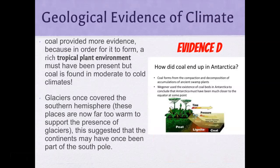Here's more evidence: coal provided more evidence because in order for it to form, a rich tropical plant environment must have been present — but the coal is found in moderate to cold climates. You'd need far more plants and animals to create that much coal where we find coal deposits today.